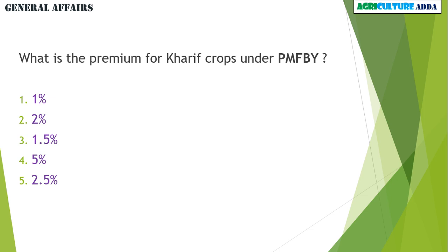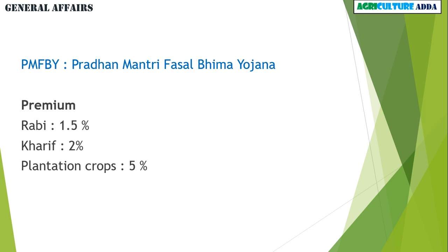In general and current affairs: what is the premium for kharif crops under PMFBY? Options are 1%, 2%, 1.5%, 2.5%. The answer is 2% for kharif crops. The premium for rabi crops is 1.5%, and for plantation crops it is 5%.